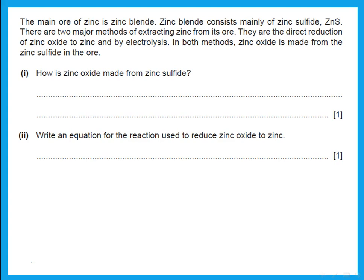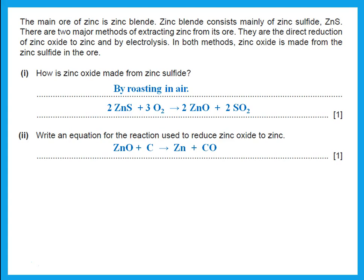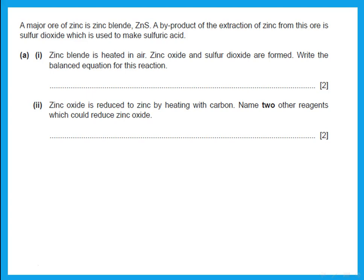Extraction of zinc from zinc blende: how is zinc oxide made from zinc sulfide? The zinc sulfide (zinc blende) is roasted in air — please be careful with the spelling of the equation. Write an equation for the reaction used to reduce zinc oxide to zinc — that is with coke to give zinc plus carbon monoxide. It could also be zinc plus carbon dioxide; balance accordingly. Both are acceptable as long as balanced.